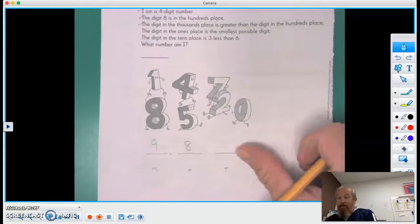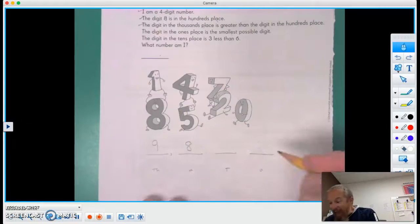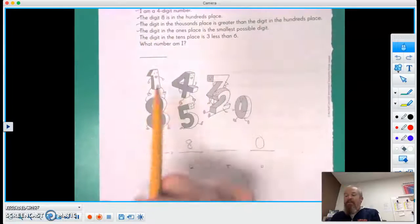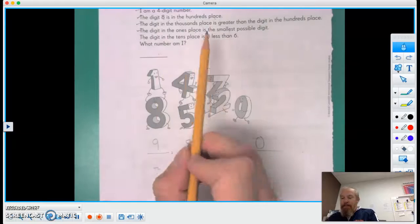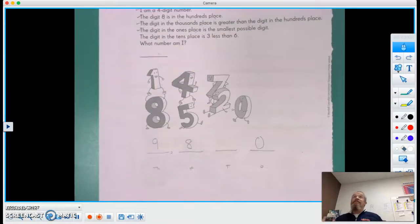And the digit in the tens place is three less than six. So if we start at six and count backwards three, we get three. Very good.